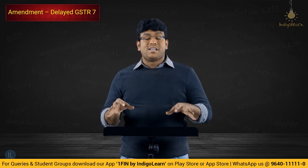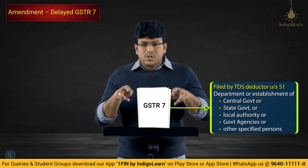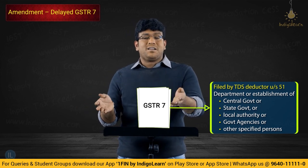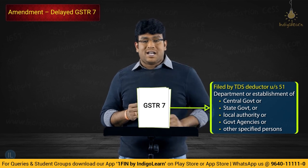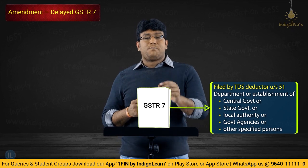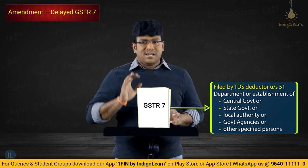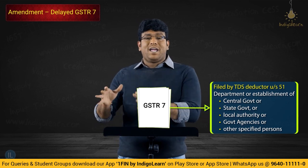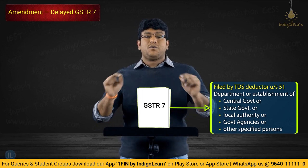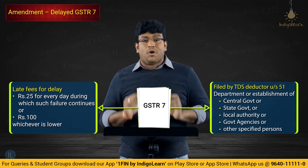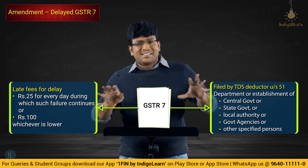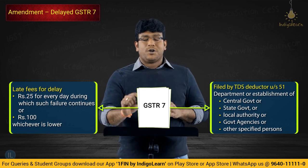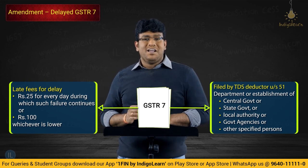There is one more interesting amendment relating to late fees for GSTR-7. GSTR-7 is filed by persons required to deduct tax at source under Section 51, namely departments of central government, state government, local authority, and public sector undertakings. They deduct tax at source and file GSTR-7 by the 10th of the next month. The new amendment states that in case of delay in filing GSTR-7, late fees shall be 25 rupees per day of default, subject to a maximum of 100 rupees under the CGST Act.